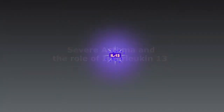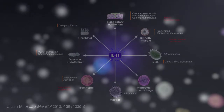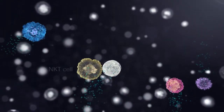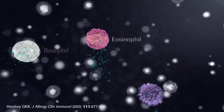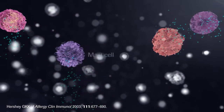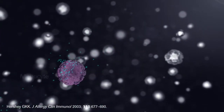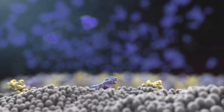IL-13 is a pleiotropic cytokine central to the type 2 response. It is produced by activated T cells, NKT cells, basophils, eosinophils, mast cells, innate type 2 cells and monocytes, and is elevated in a subpopulation of patients with asthma.